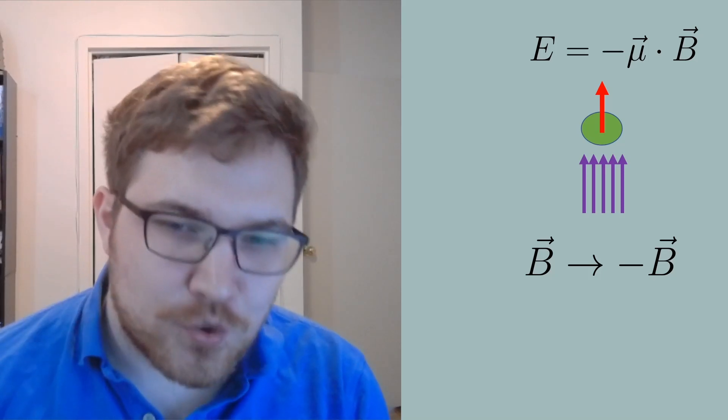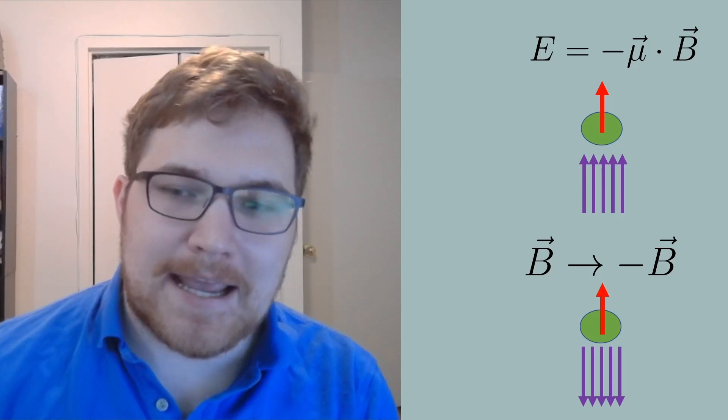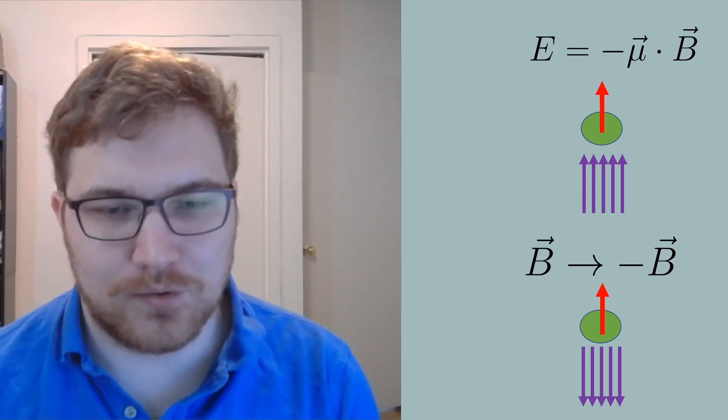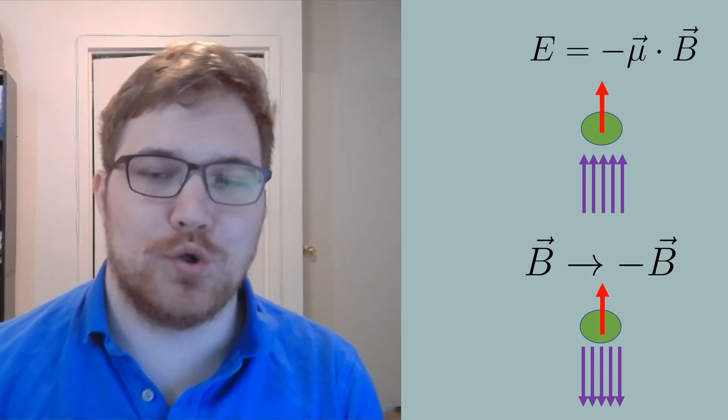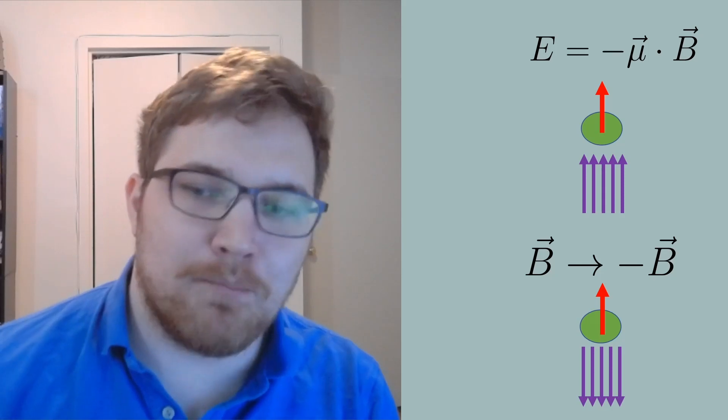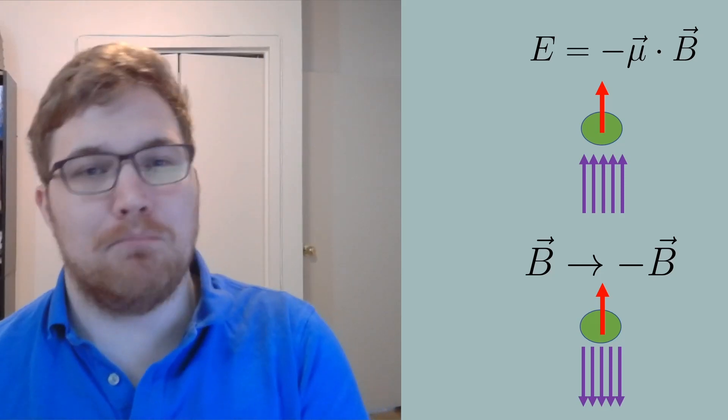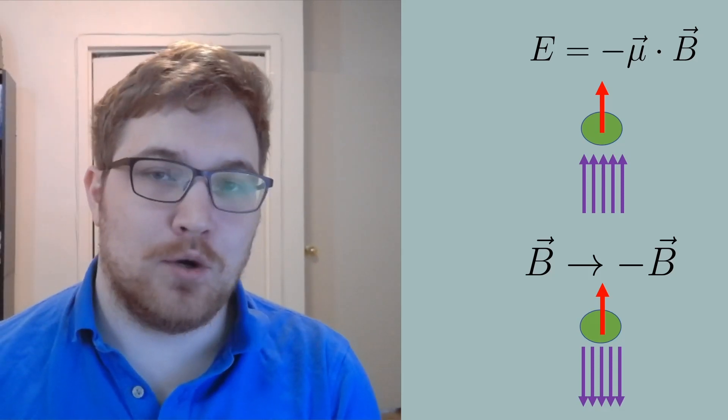If the switch was quick enough, the magnetic moment doesn't change its direction and is now in the opposite direction of the new magnetic field. This then corresponds to a higher energy state for the nuclear spins since the magnetic moment is anti-parallel with the field, or at least most of the magnetic moments are anti-parallel with the magnetic field.